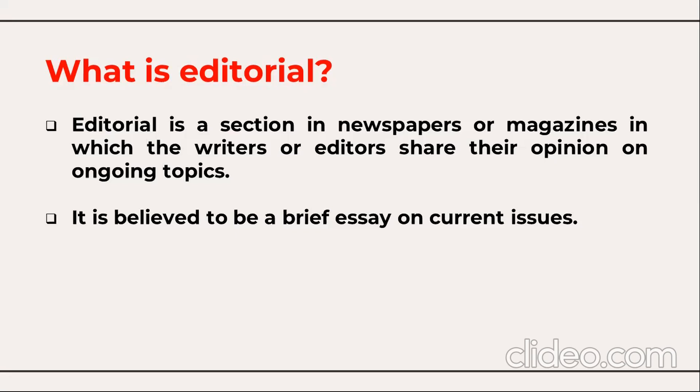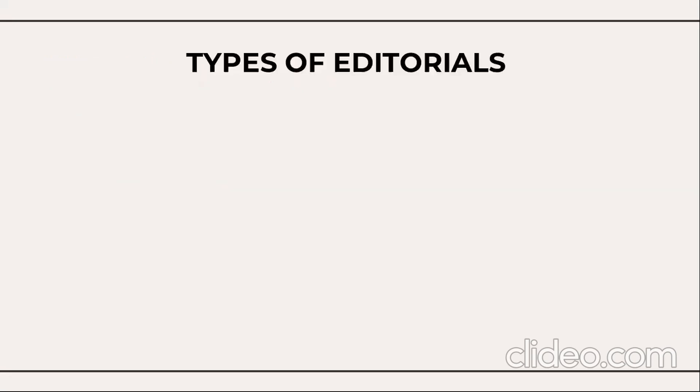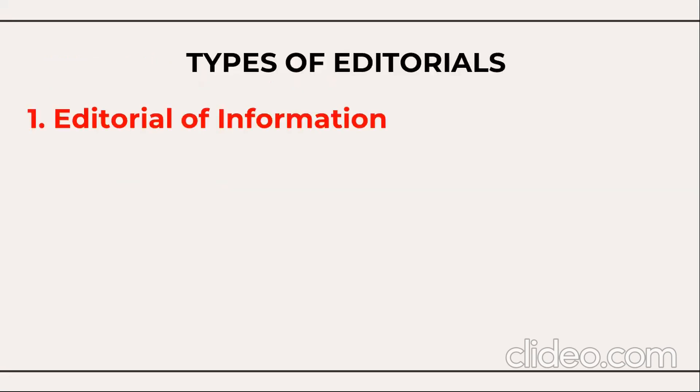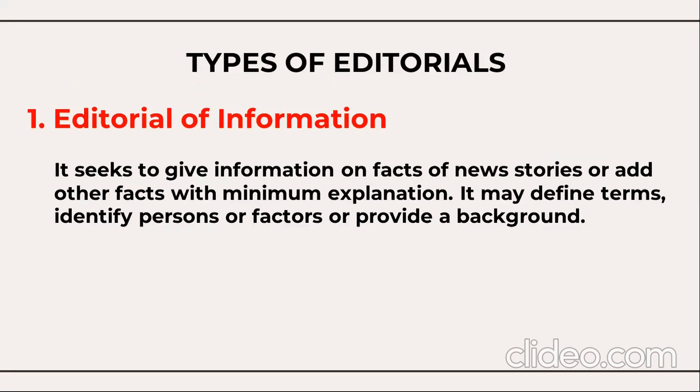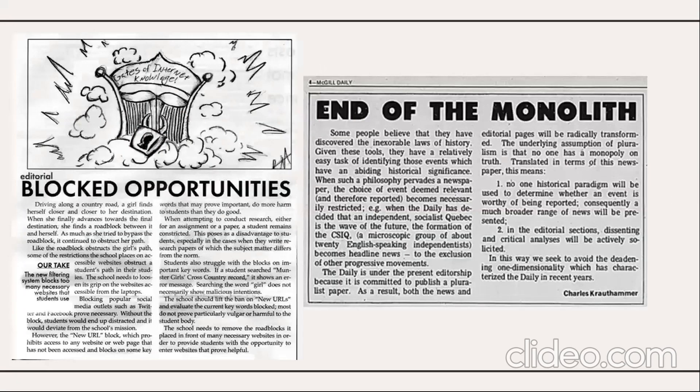The different types of editorials: Number one is the editorial of information. It seeks to give information on facts of news stories or adds other facts with minimum explanation. It may define terms, identify persons or factors, or provide a background. Let's see this example here — this example gives information about some blocked opportunities.